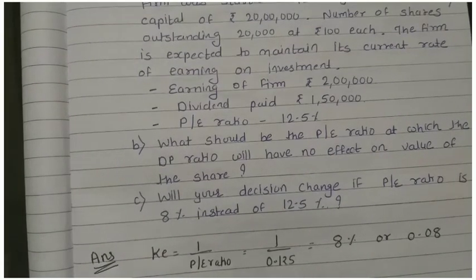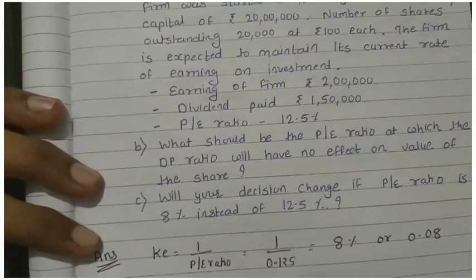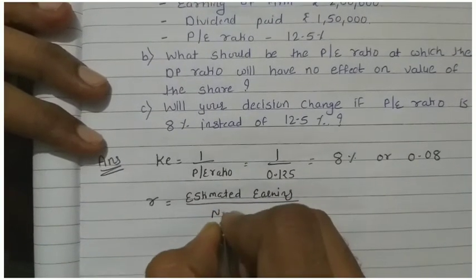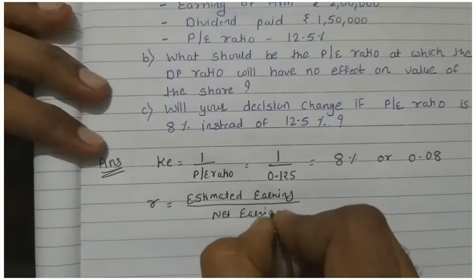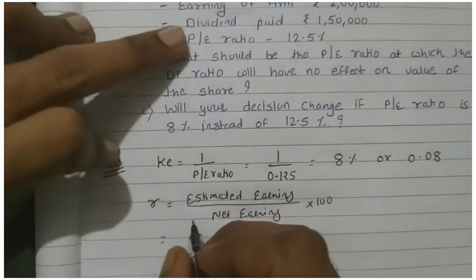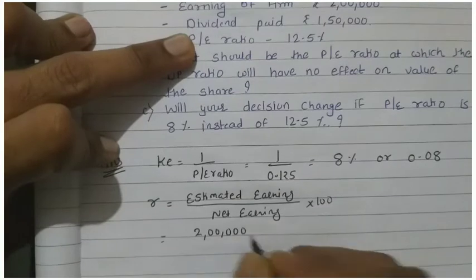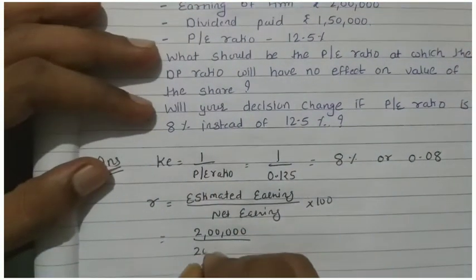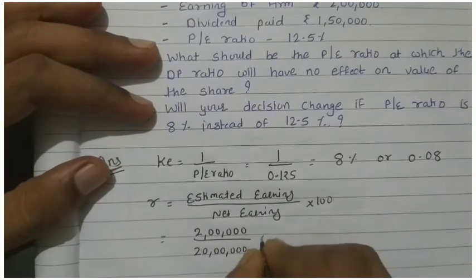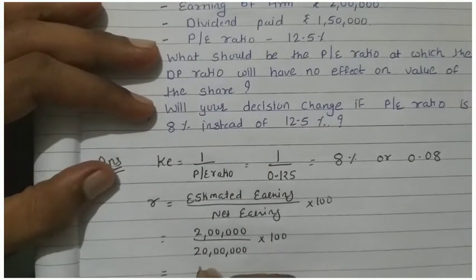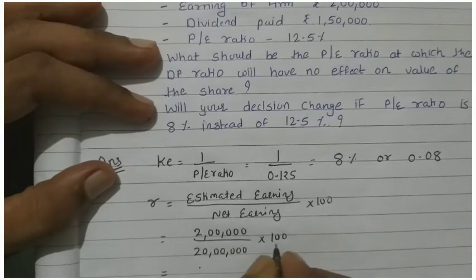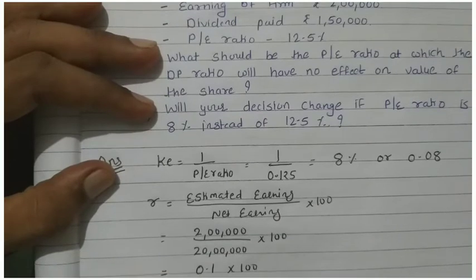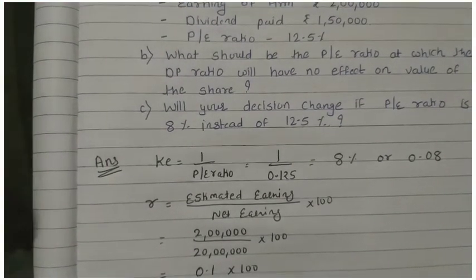Next step, R. The formula for R is estimated earning divided by net earning or total earning into 100. How much did we earn? 2 lakh. Net earning or total assets equity capital is 20 lakh. Into 100. So your answer is 0.1 into 100 which is 10%.